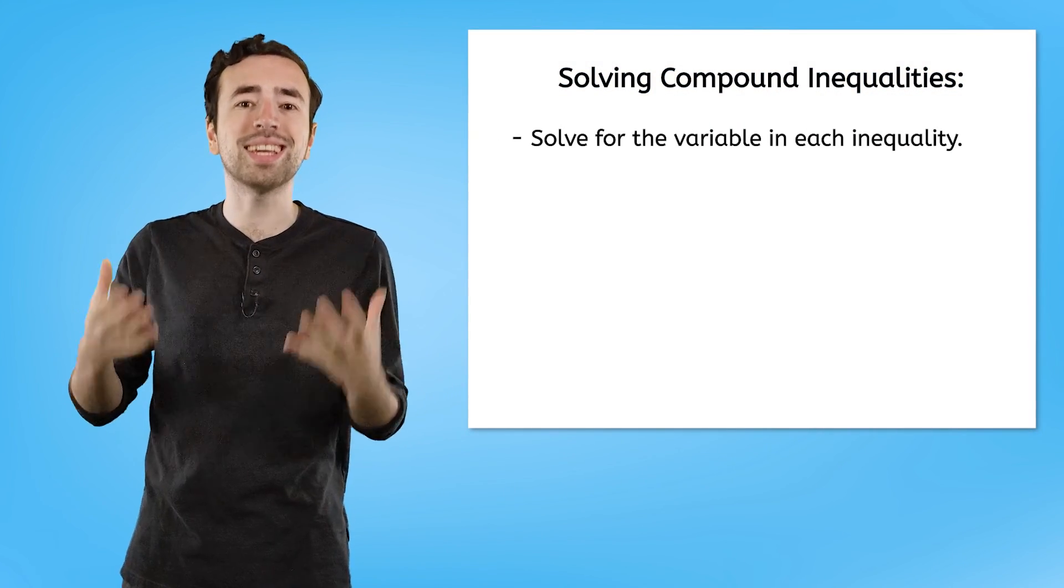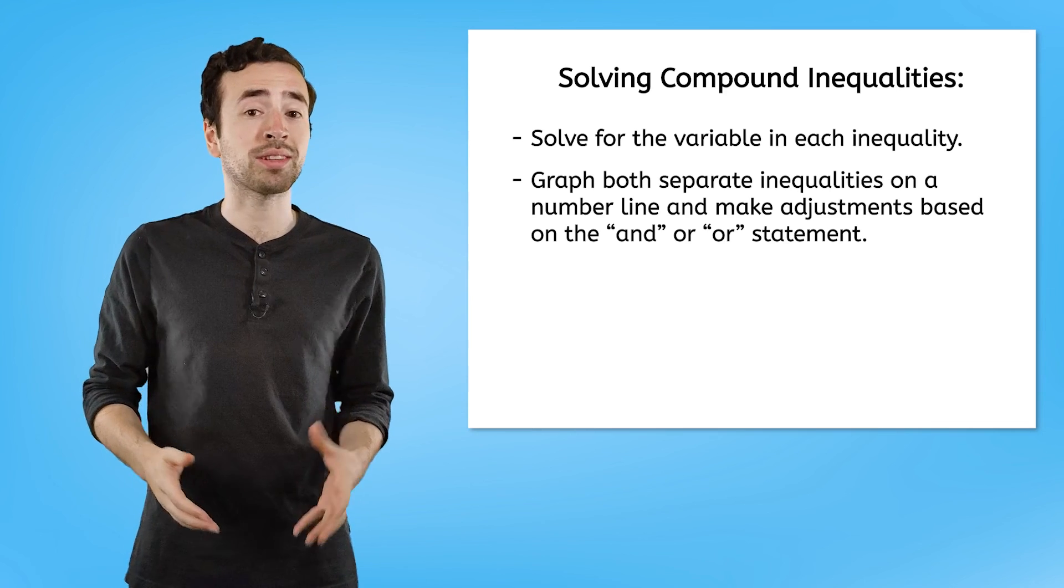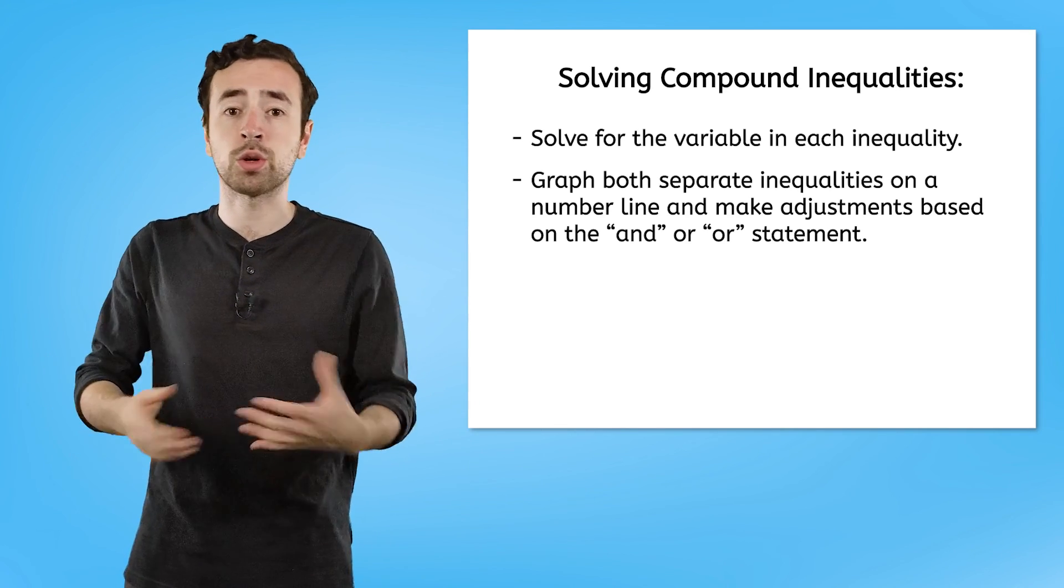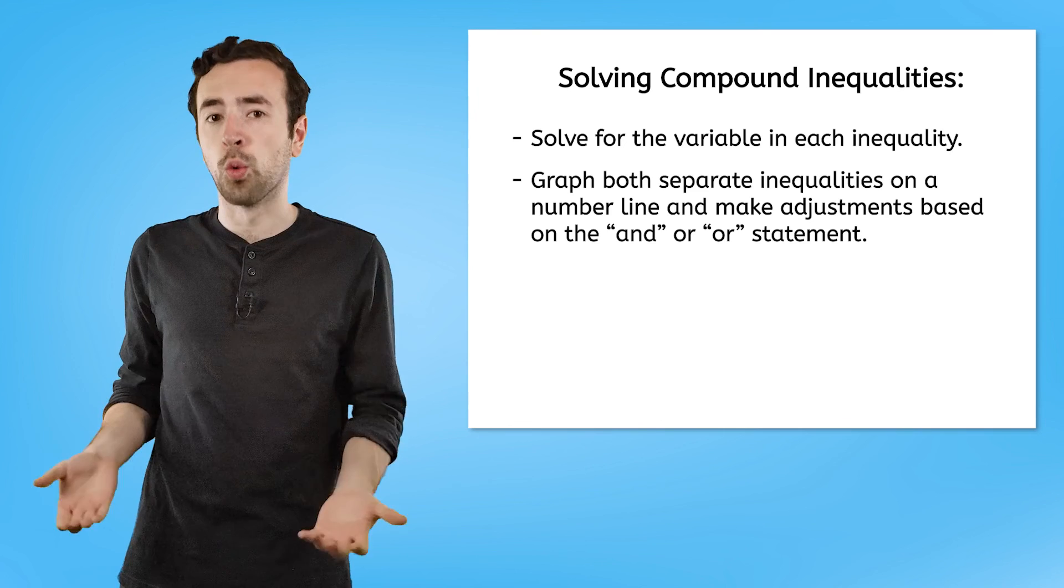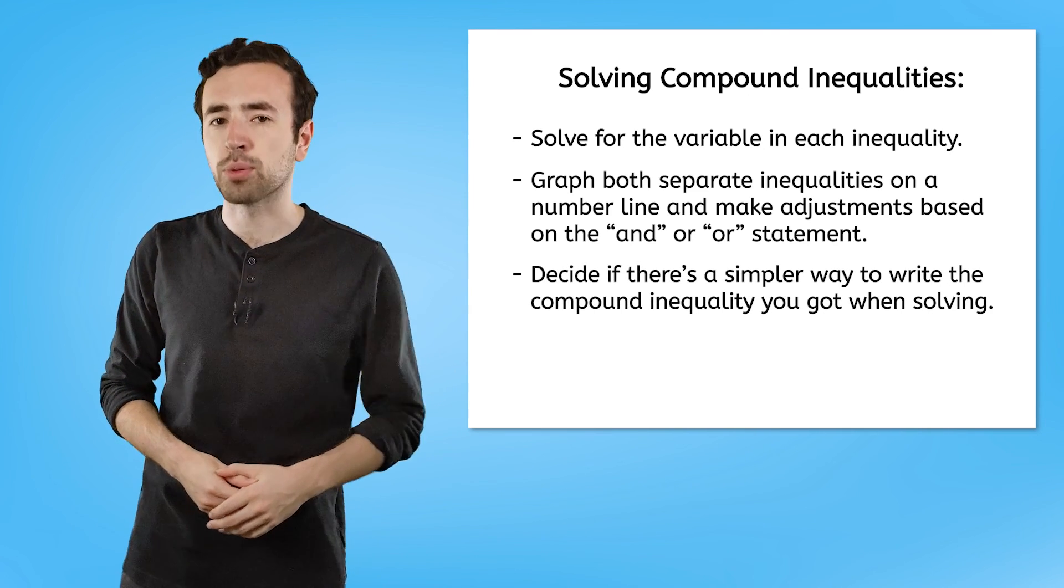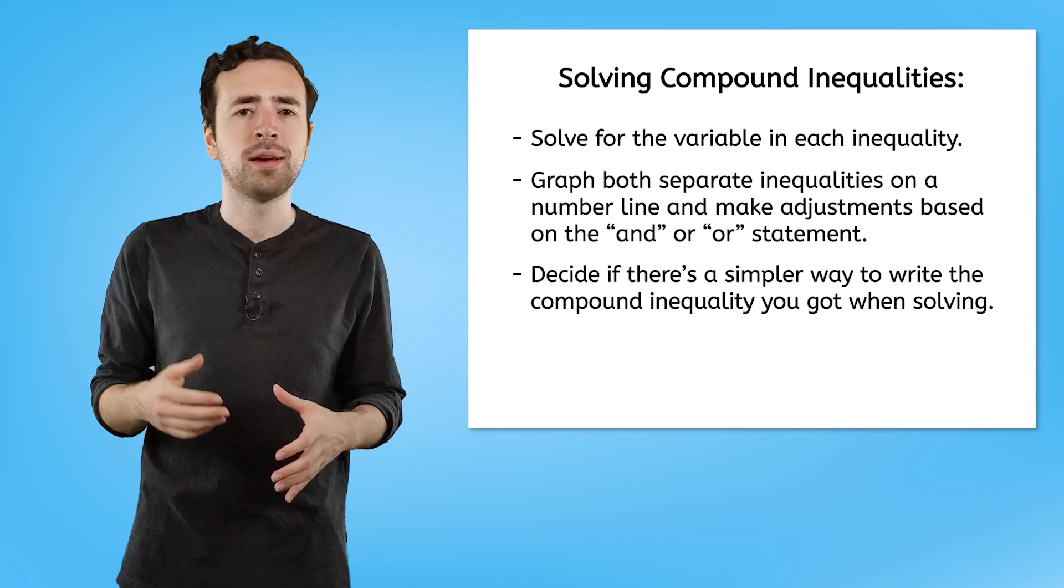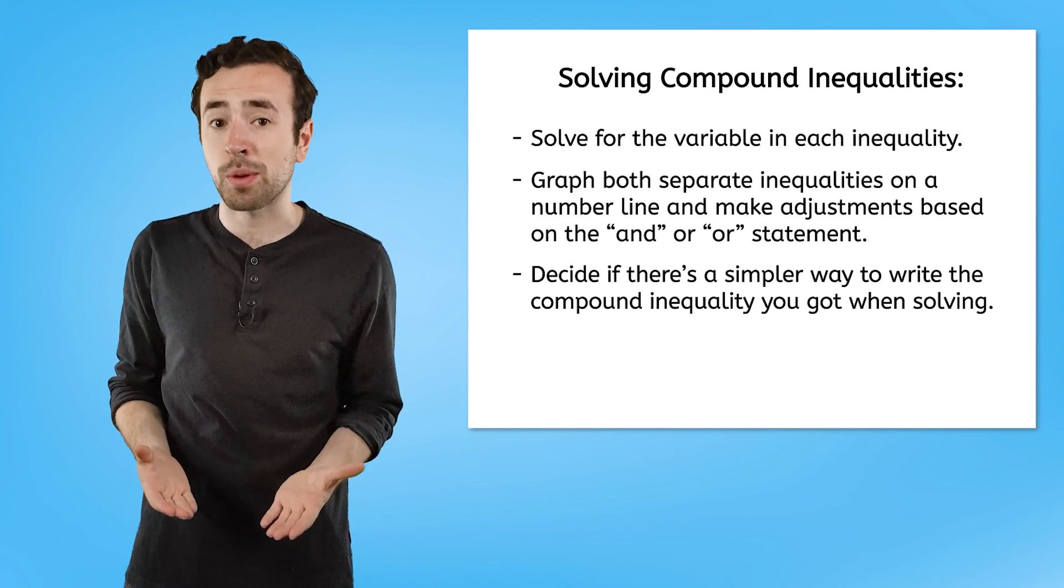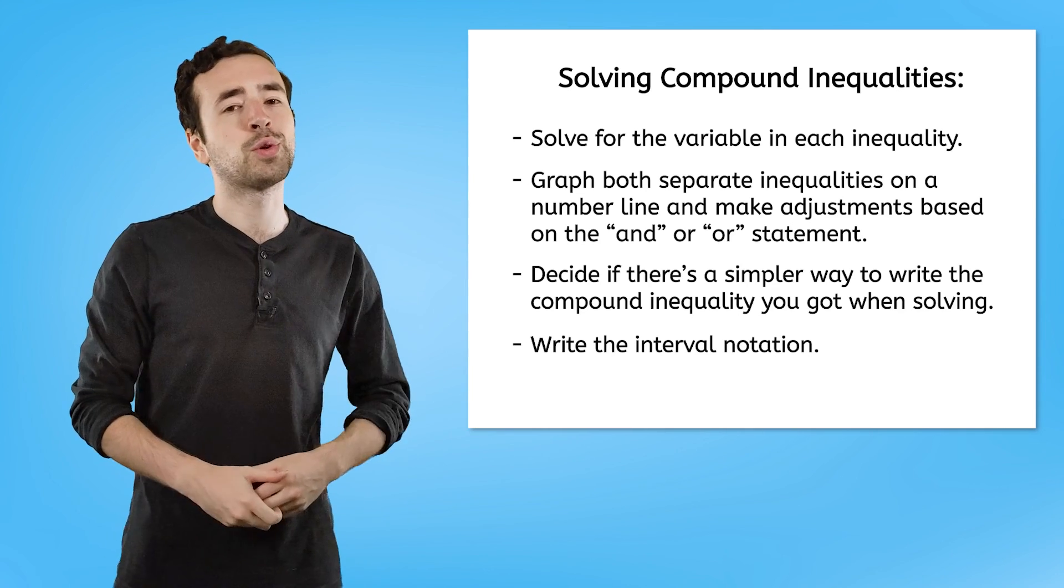Compound inequalities may seem strange and tedious at first, but if you think of the process in smaller sections, it might be helpful for you. You need to solve for the variable in each inequality. Then graph both inequalities on a number line, and do any erasing or adjusting based on the AND or OR statement. Then decide if there is a simpler way to write that compound inequality you got that's maybe more efficient or gets rid of any unnecessary repetition. And finally, write the interval notation. It can take some practice to really get comfortable working with compound inequalities, which is why there are some extra practice problems for you to work through in your PDF before you start the practice game.